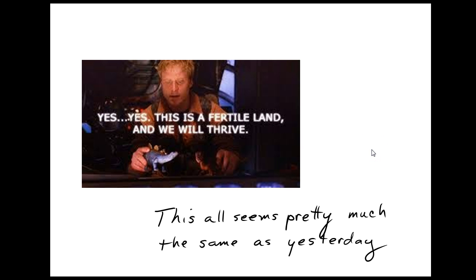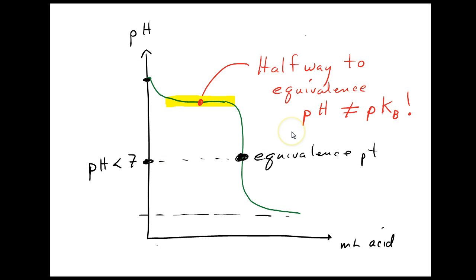It all seems pretty easy and wonderful. Pretty much like yesterday. Except, in the middle of the buffer zone, the pH is not equal to pKb. Everything seems sort of the same, but a little bit different, and you might be expecting this to be true. But it's not.